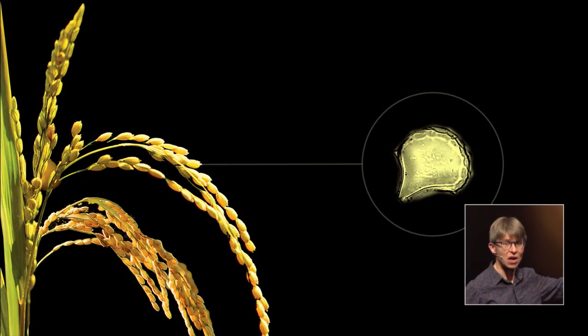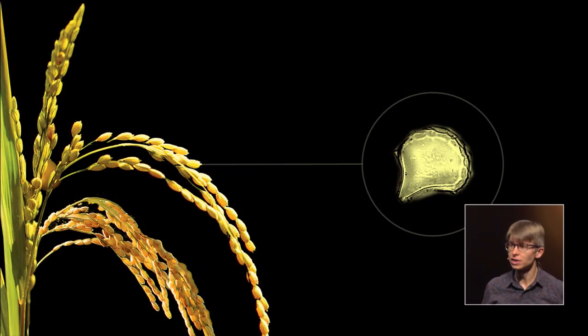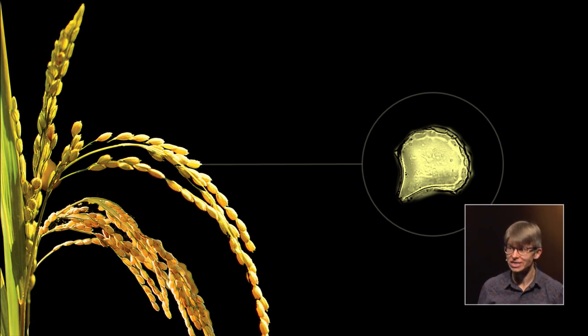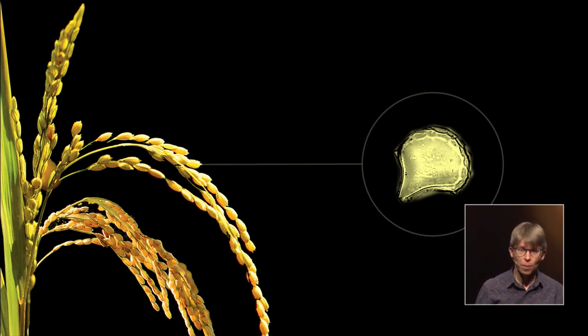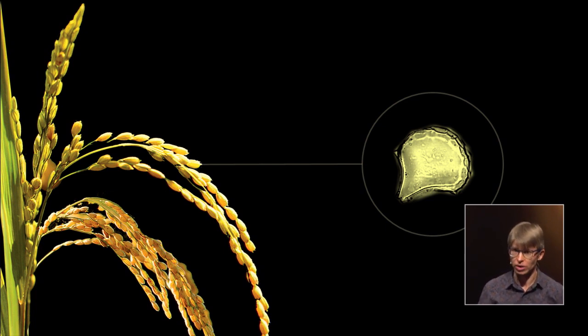On the screen here, you can see a rice plant. And over there, you can see what is called a phytolith, or a plant stone, magnified thousands of times its real size. And it is these microscopic particles that are a key through which I am trying to unlock ancient agriculture.